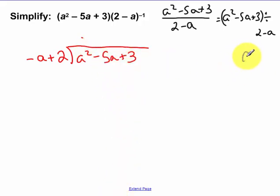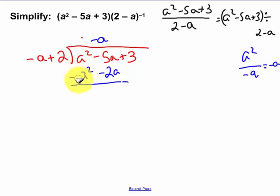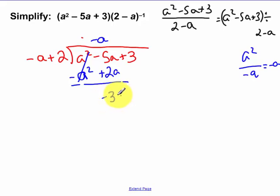Do a squared divided by negative a — that simplifies to negative a, so I have negative a out front. Negative a times negative a is positive a squared, minus 2a. Remember to multiply the 2 times that term. You're subtracting this whole thing. I like to distribute the negative sign rather than use parentheses, because I often forget to subtract. I change that sign — basically distributing the negative that was before the parentheses. Those cancel as they should, and then we have negative 5a plus 2a, giving negative 3a.